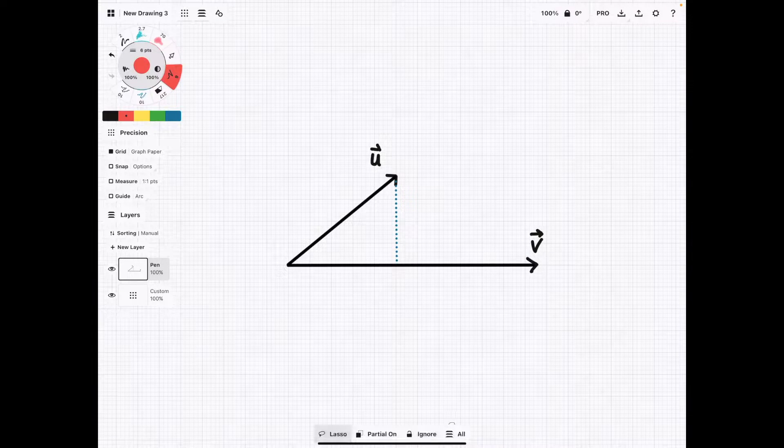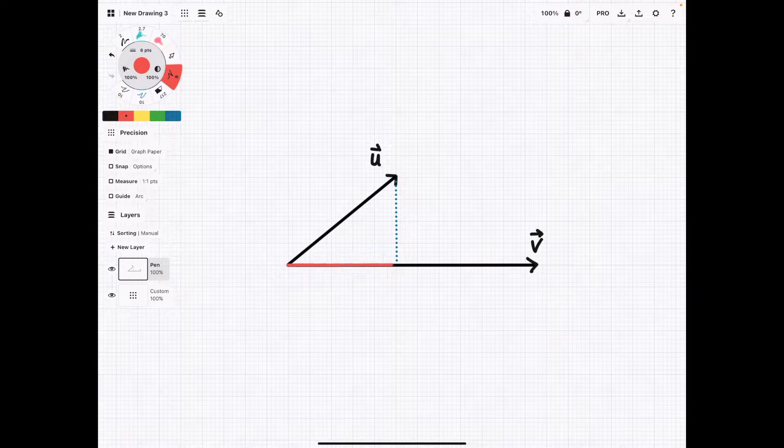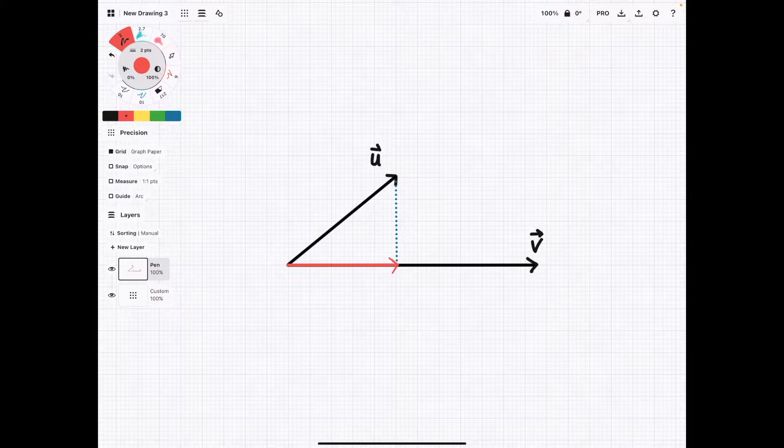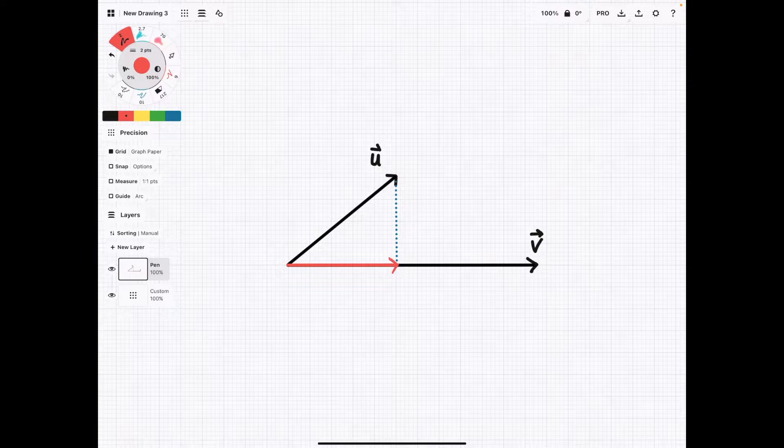and we want to project u onto v like this. When we do this, we're going to create another vector, the projected vector, and it's going to look like this. And so we want to figure out what this new vector is.